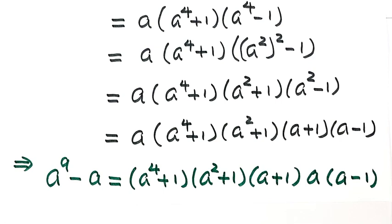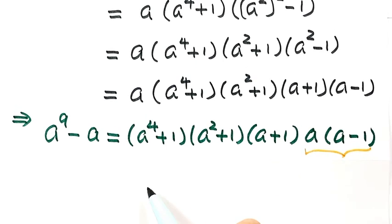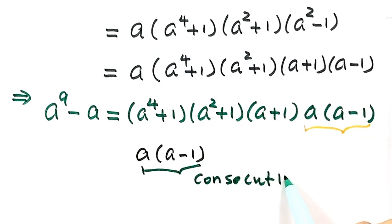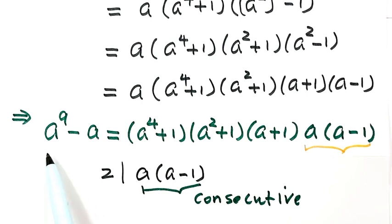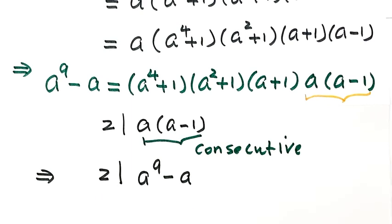Because the question is a proof that a to the power of 9 minus a is divisible by 6, it must be divisible by both 2 and 3. First, let's see if it's divisible by 2. Because a is an integer, a times a minus 1 are two consecutive integers. For two consecutive integers, one of them must be divisible by 2, so the product is also divisible by 2. Therefore, a to the power of 9 minus a is divisible by 2.